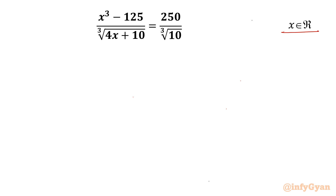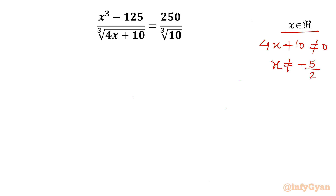I will begin with: the denominator cannot be 0. So 4x + 10 cannot be 0, which means 4x cannot equal −10, or x cannot equal −5/2.